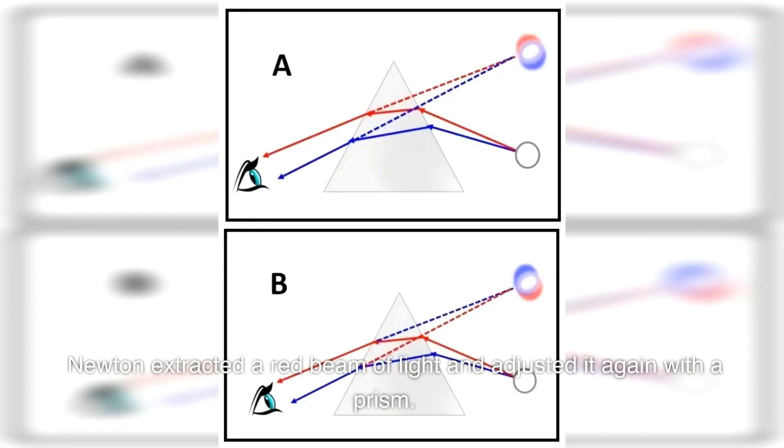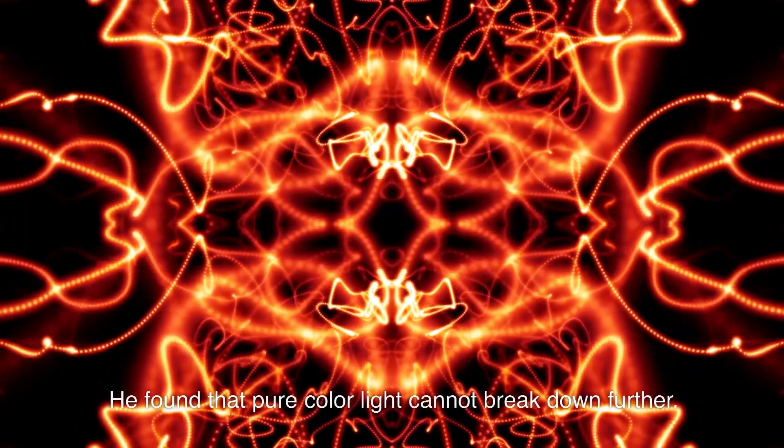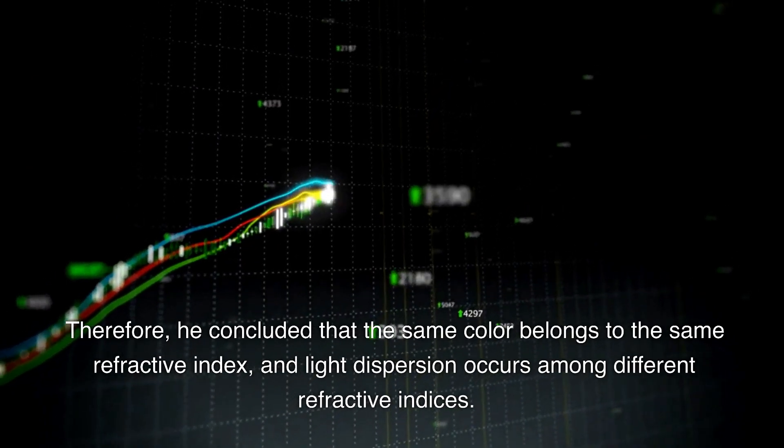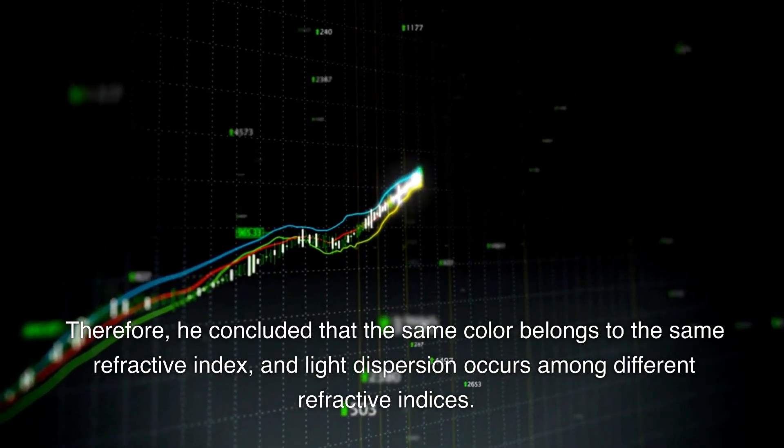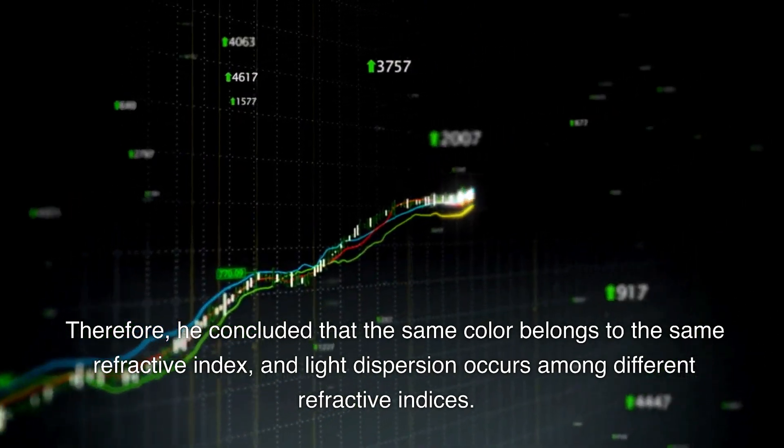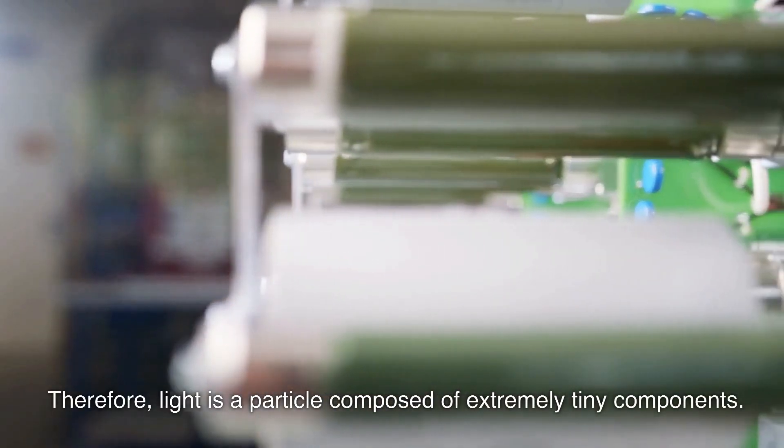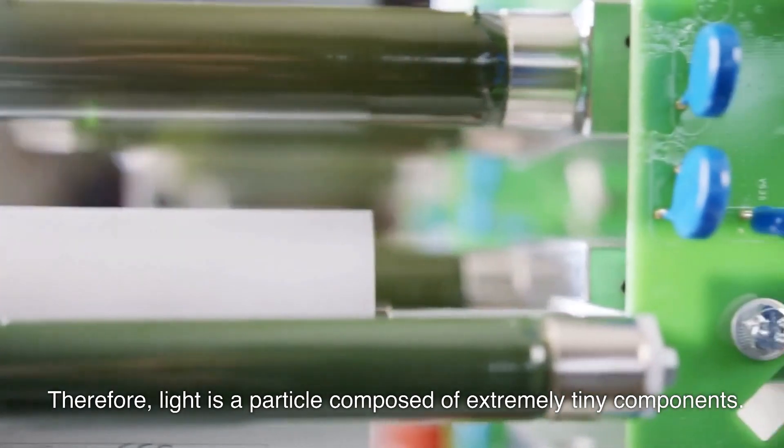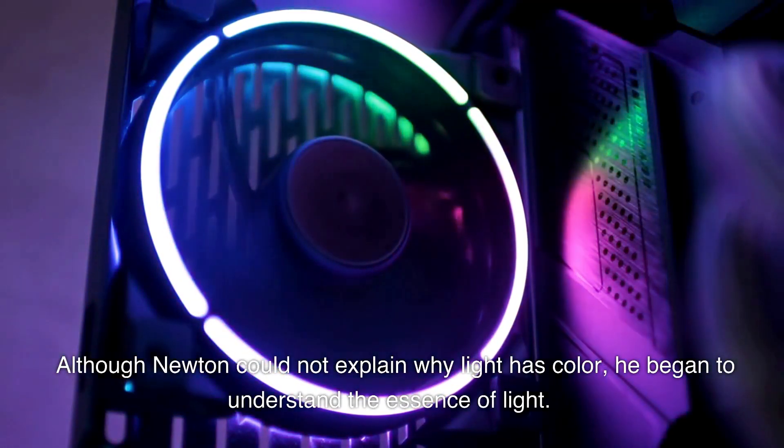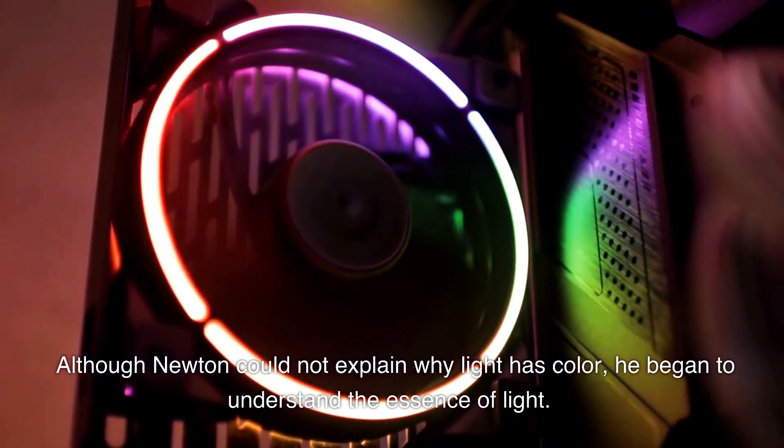White light can be decomposed into seven pure colors, but can pure colors of light be further decomposed? Newton extracted a red beam of light and adjusted it again with a prism. He found that pure color light cannot break down further. Therefore, he concluded that the same color belongs to the same refractive index, and light dispersion occurs among different refractive indices. Therefore, light is a particle composed of extremely tiny components. Although Newton could not explain why light has color, he began to understand the essence of light.